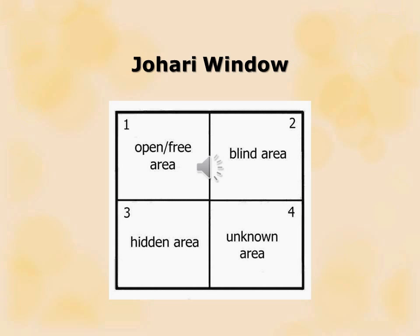In pane two, this is called the blind area. These are concepts and components of ourselves that we possess but may not be aware of. We may not be aware of the impact that we have on others — an example of this might be that we feel that we are direct, but in reality, other people view us as rude.